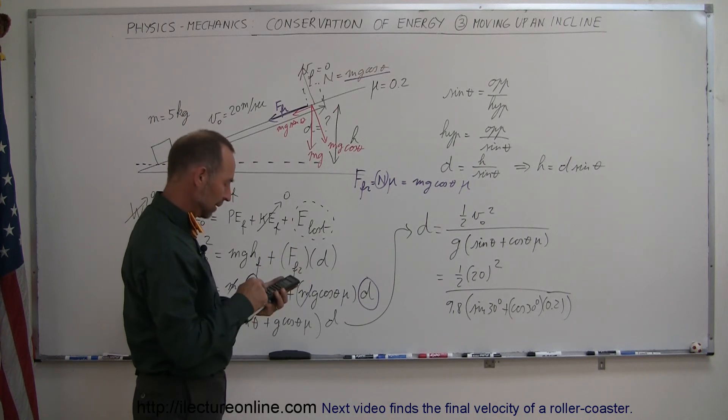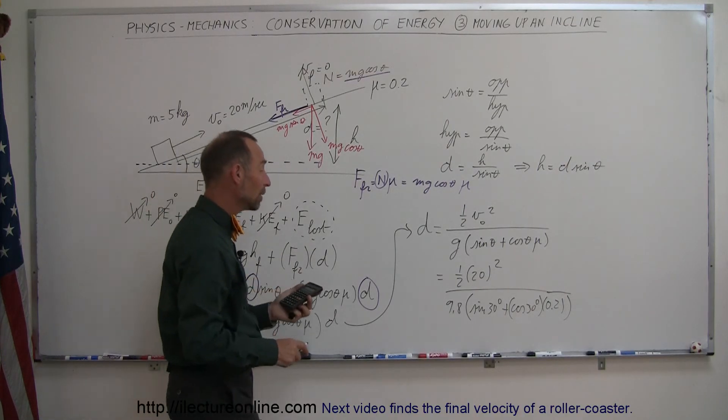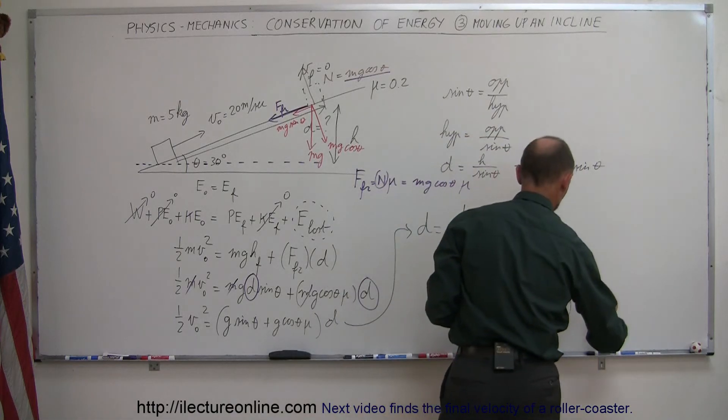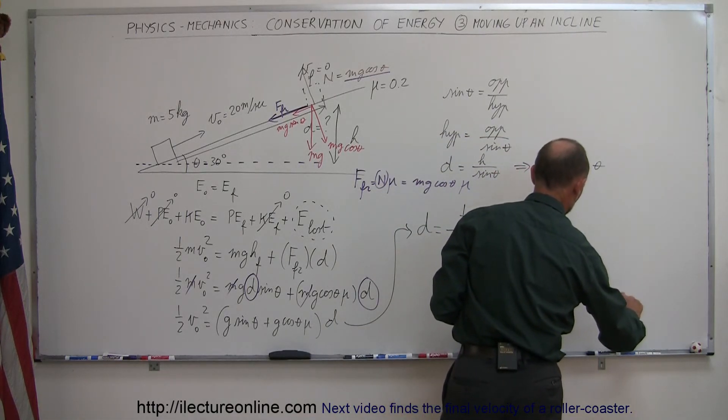Put it into the numerator, times 0.5, and then times 20 squared, which is times 400, equals, and that gives us 30.3 meters. So this is equal to 30.3 meters.